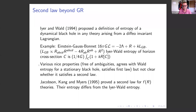Shortly afterwards, Jacobson, Kang, and Myers investigated so-called f(R) theories — theories for which the Lagrangian is a function of the Ricci scalar. For this class, they proved a second law, with entropy proportional to the derivative of f integrated over the horizon. Interestingly, their entropy differs from the Iyer-Wald entropy, suggesting that Iyer-Wald cannot be the full story.